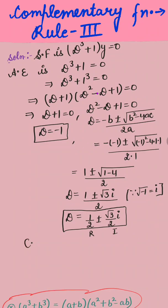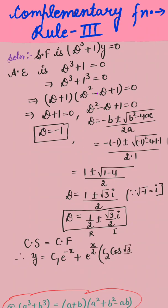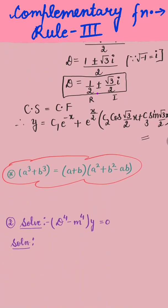Since the complete solution equals the complementary function, the answer for y is: y = c₁e^(-x) + e^(x/2)[c₂ cos(√3/2 · x) + c₃ sin(√3/2 · x)]. This is our answer.